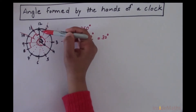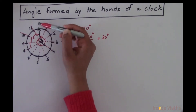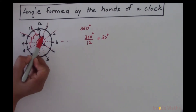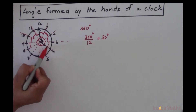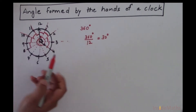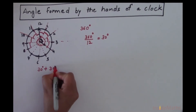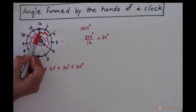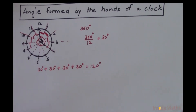Now we have to find the angle formed by the minute hand, which is at 12, and the hour hand, which is at 4. We know that each interval is 30 degrees, so the angle between these two hands is 30 + 30 + 30 + 30, which equals 120 degrees. So let's do one more example.